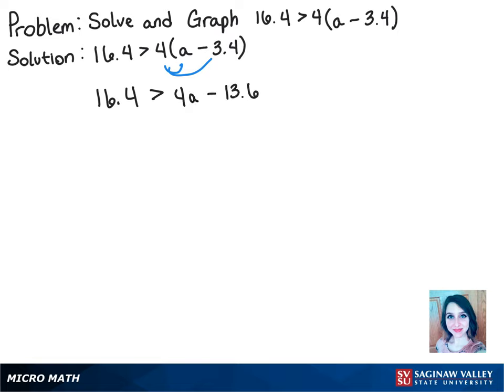Now we want to get a on one side by itself, so we'll move the constant 13.6 by adding it to both sides. So then we get 30 is greater than 4a.